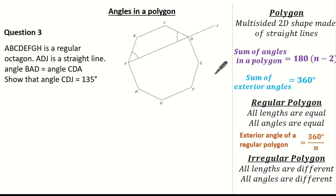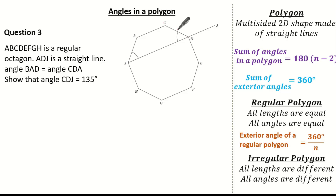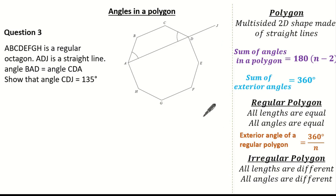Now let's have a look at another exam question. A, B, C, D, E, F, G and H is a regular octagon. We know A, D, J is a straight line, and B to A to D is exactly the same angle as C to D to A. We have to show that angle C, D, J is 135 degrees. See if you can give it a go using the key information we've looked at.